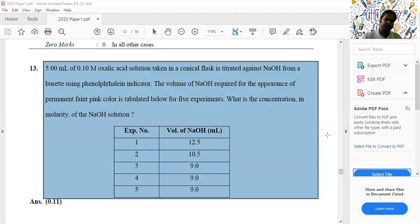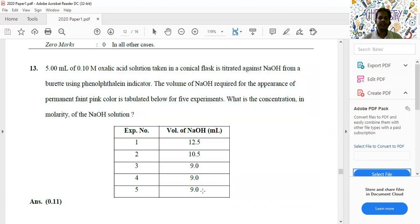The question is: 5 mL of 0.1 molar oxalic acid solution is taken in a conical flask and is titrated against NaOH from a burette using phenolphthalein indicator. The volume of NaOH required for appearance of permanent faint pink color is tabulated below for five experiments. The volume of NaOH is given as: in the first experiment 12.5 mL, in the second experiment 10.5 mL, and then 9, 9, and 9 mL.